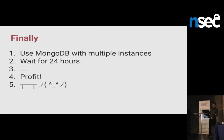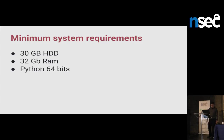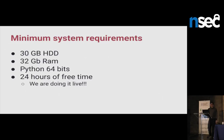Finally, I was able to use MongoDB with multiple instances — inserting each 1,000 blocks into the DB — and waited 24 hours. And finally I was able to make it work. The minimum system requirements for running the tools — for crawling, not the DB — is 30 gig of drive, 32 gig of RAM, Python 64-bit for sure, 24 hours of free time, and a table to flip. That's really, really important. You will not succeed without it.